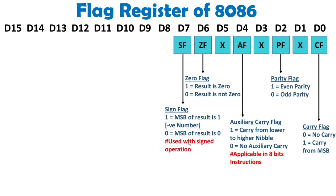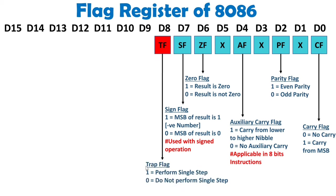If you observed the flag register of 8085, it covered only those bits. Intel upgraded its flag register by keeping all the flags from 8085 as they were, and additionally added another 8 bits. With D8, there is the trap flag, which enables one-by-one instruction execution. If it is 1, you can perform single-step execution; if it is 0, the complete program will execute.